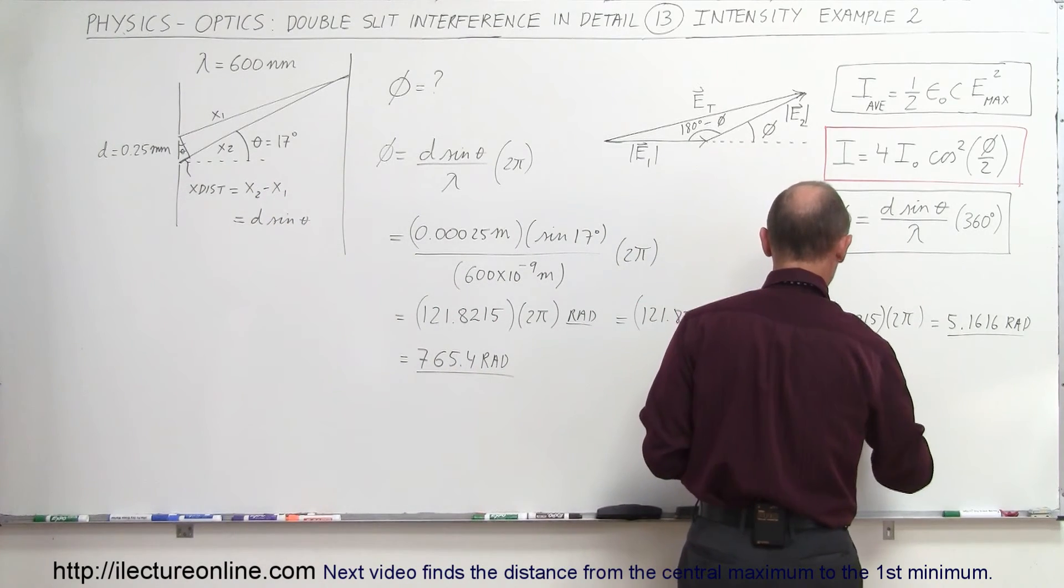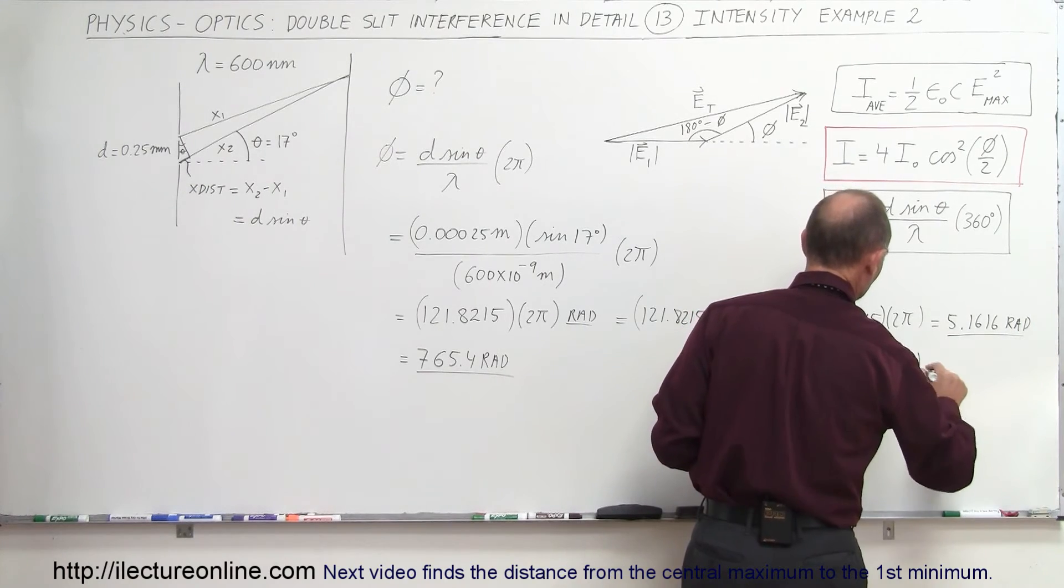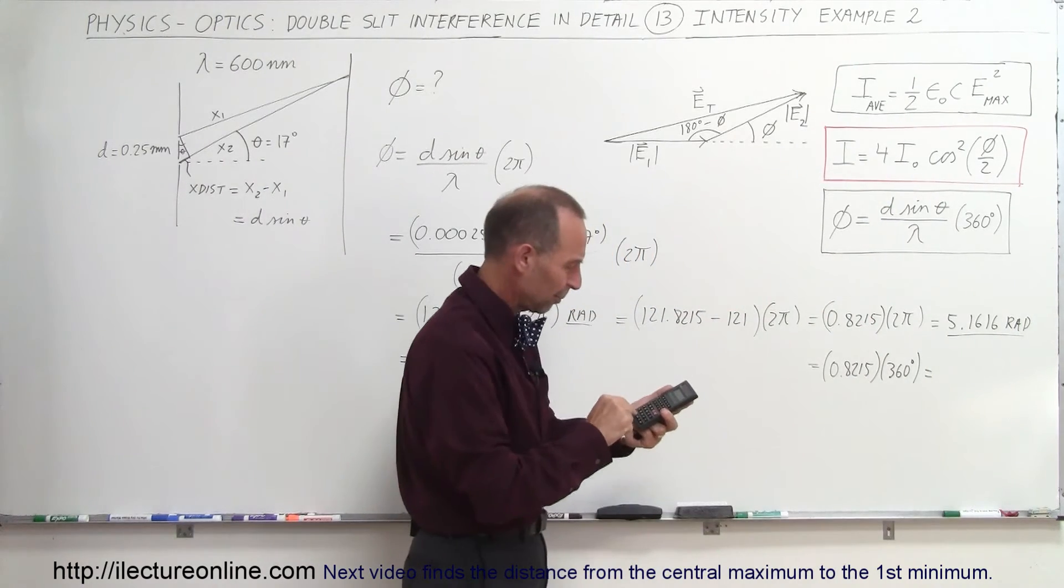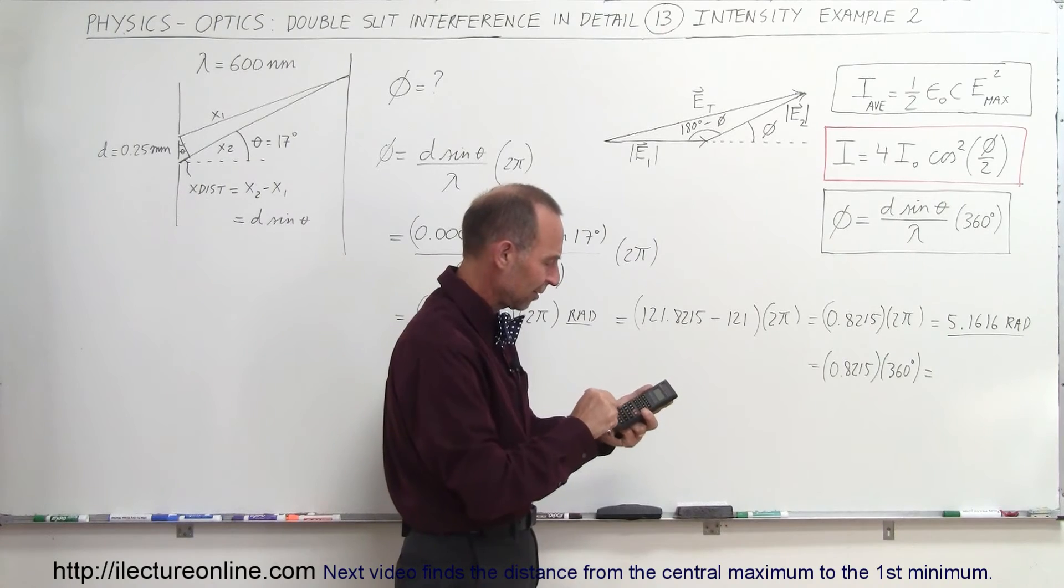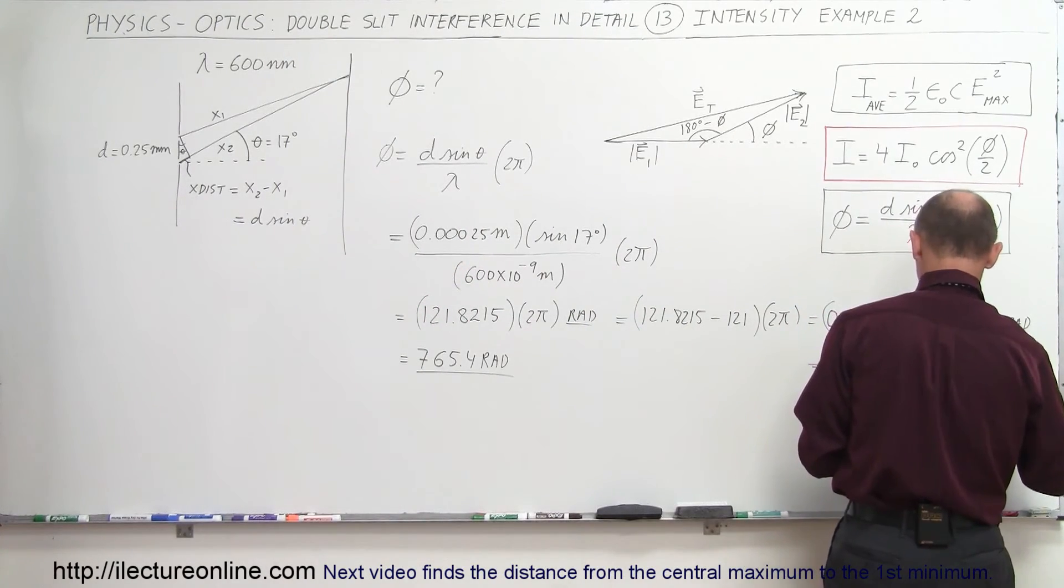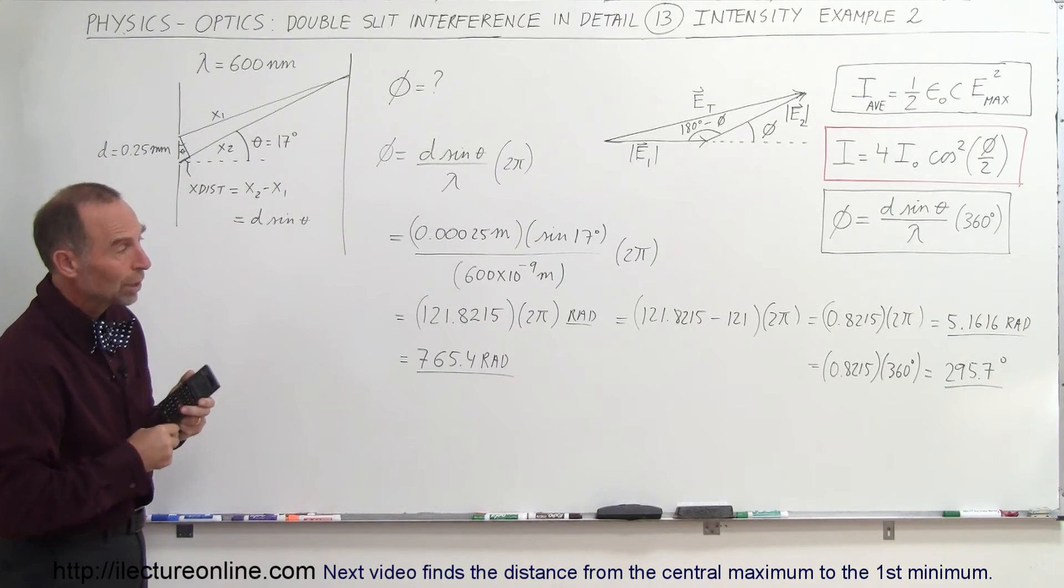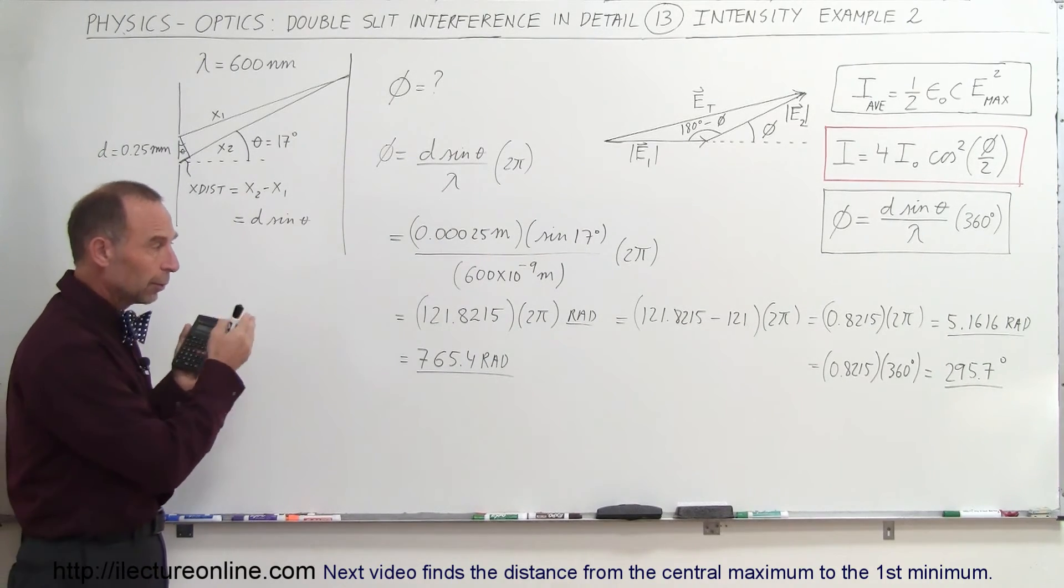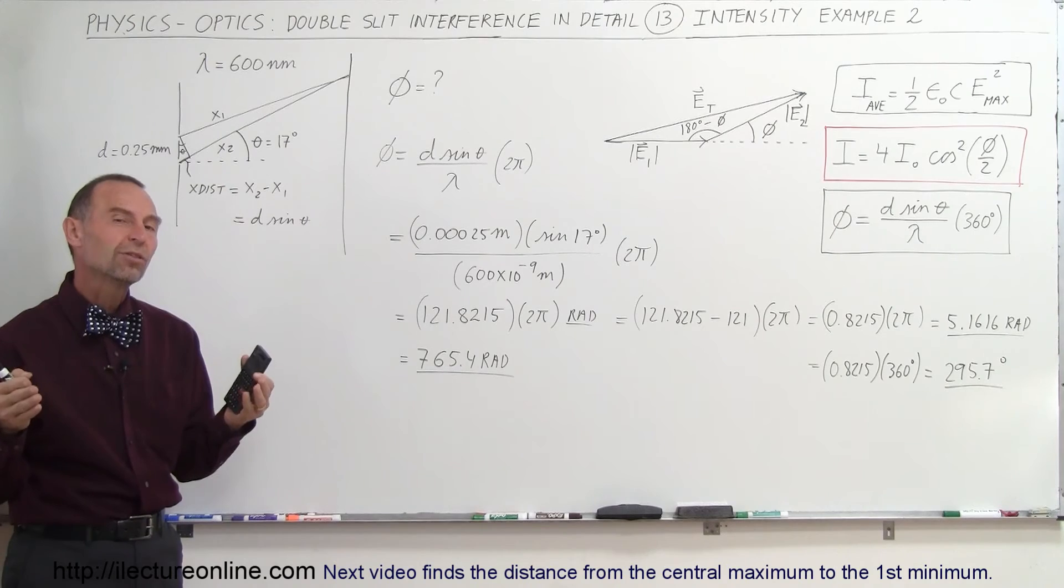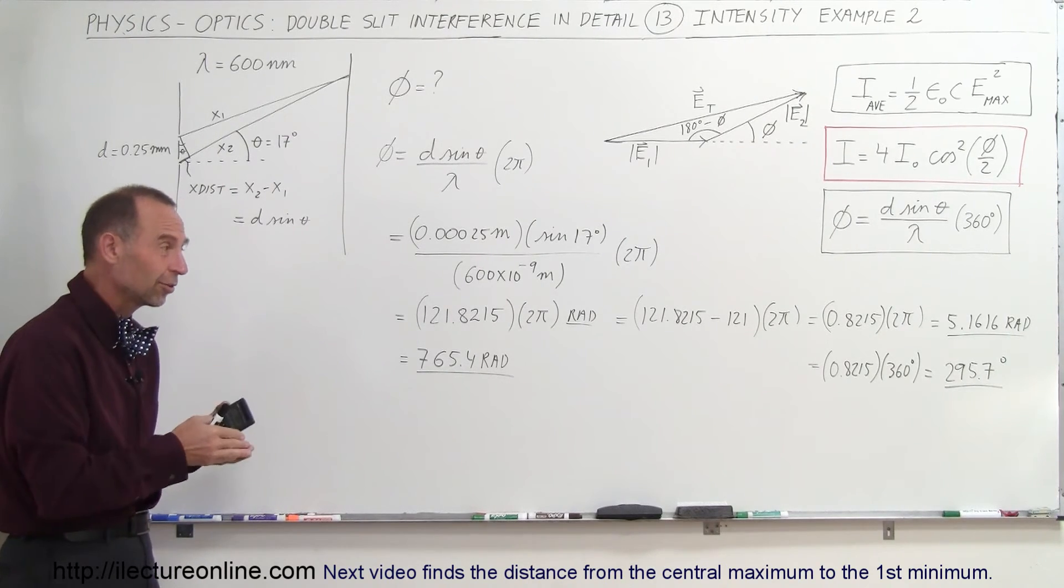So we can also say this is equal to 0.8215 times 360 degrees, and 0.8215 times 360, that would be a phase difference of about 295.7 degrees. Same thing. So all we're looking for here is the difference in the phase between one wave and the other wave, and we want to always return something between 0 and 2 pi radians, or 0 and 360 degrees.